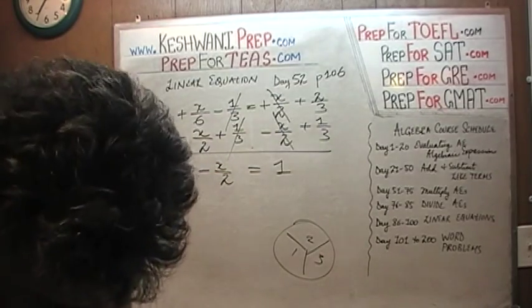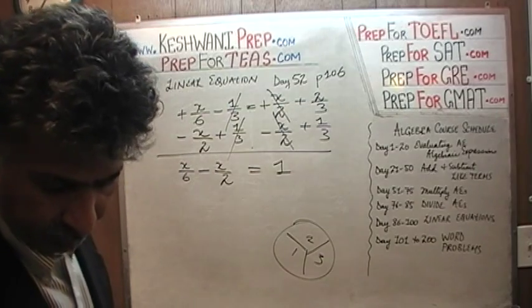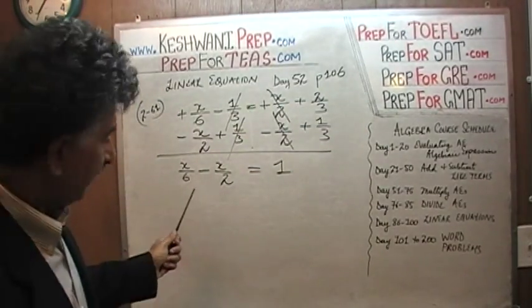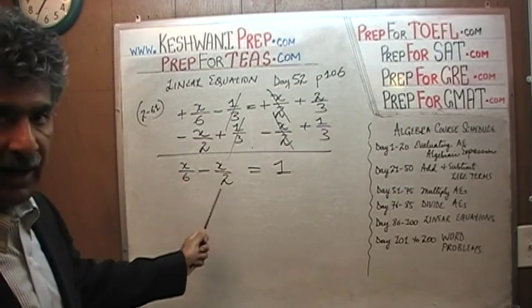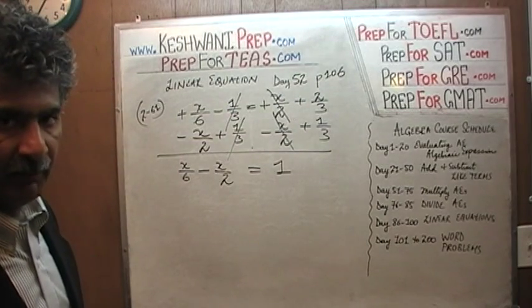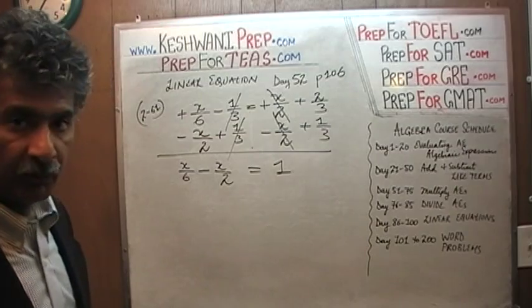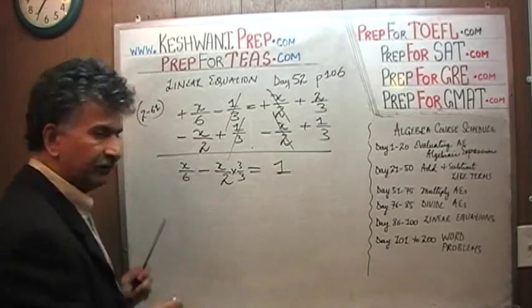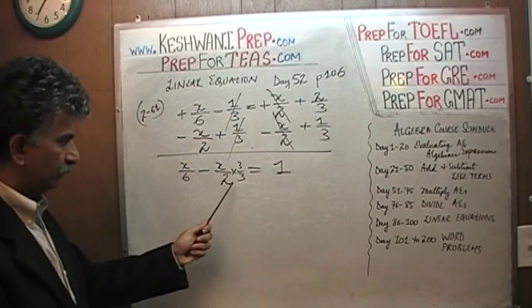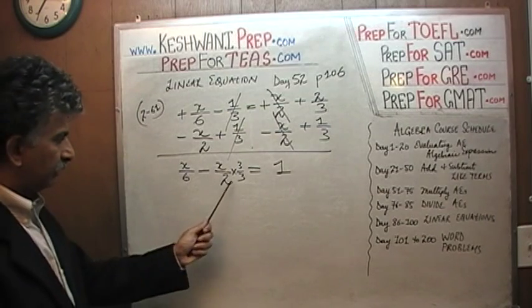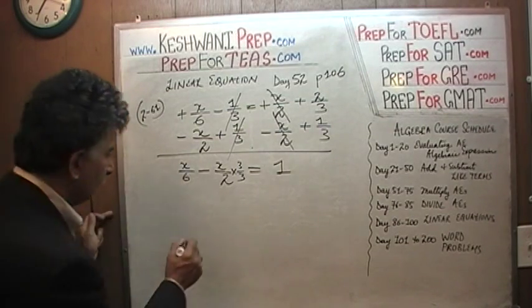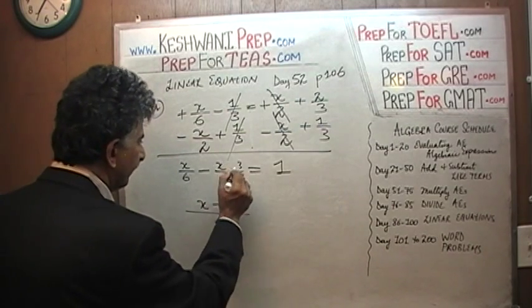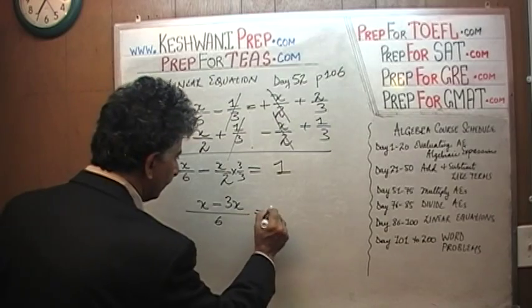What do we have here? We have x over 6 minus x over 2. Now this story will begin. In order for us to be able to add these two fractions, we have to have a common denominator. And the common denominator will be 6. In other words, multiply the top and the bottom by 3. So now we have 2 times 3 is 6 here, and 6 here. So we have a common denominator of 6. And we get x minus 3x equals 1.